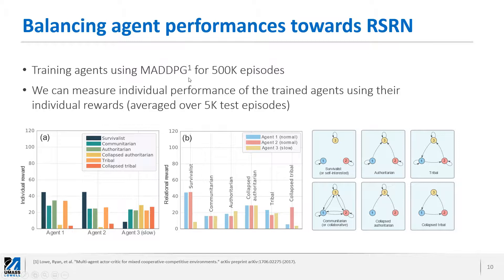To train our agents, we used the well-known multi-agent deep deterministic policy gradient algorithm and trained agents for 500,000 episodes. We then measured the individual performance of each agent through its individual reward averaged over 5,000 test episodes. The individual reward of agents in the survivalist community is completely unbalanced because agent three is slower than the other two. In a communitarian society, the individual performances are relatively balanced because we imposed a fully collaborative network on top of the system. The same holds for collapsed authoritarian, where agent three receives a good reward despite being slower.